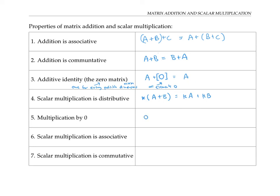Multiplication by the scalar zero is just going to multiply every single entry of my matrix by zero, so that gives me a zero matrix. Scalar multiplication is associative in the sense that K times L, multiplied by matrix A, is the same as K times LA. And scalar multiplication is commutative in the sense that K times A is the same as A times K, pretty much by definition. So all of the properties we've mentioned about regular addition and multiplication work for matrix addition and scalar multiplication. But we'll see in a future video, when we talk about matrix multiplication, that there are some surprises — not all these properties will hold.